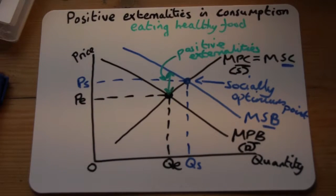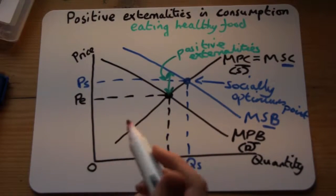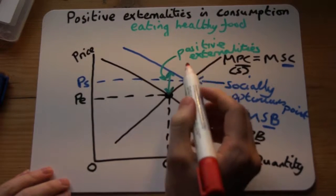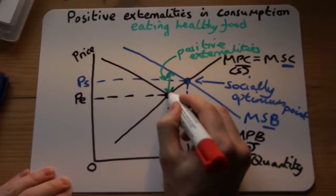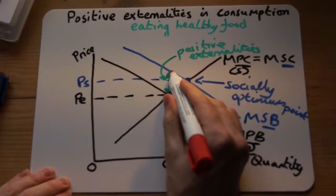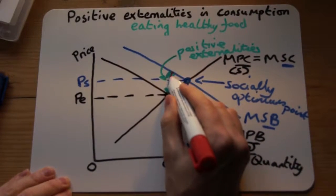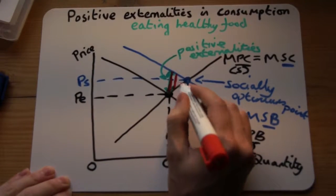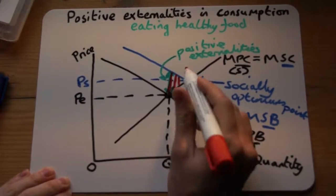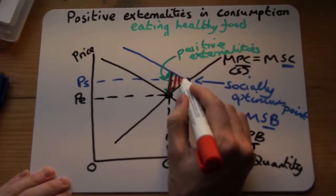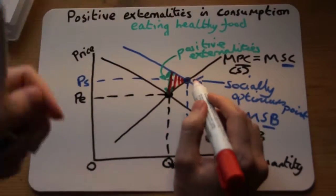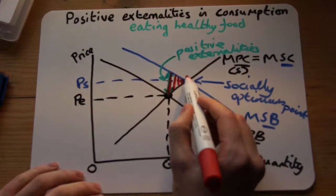So we have an issue — we have a market failure. We need to find the deadweight welfare loss, or the potential welfare gain. We go from the free market point up to the new line; those are the positive externalities. If we consume a little bit more, we'll get more positive externalities, until we reach the socially optimum point where we can no longer gain any more externalities.